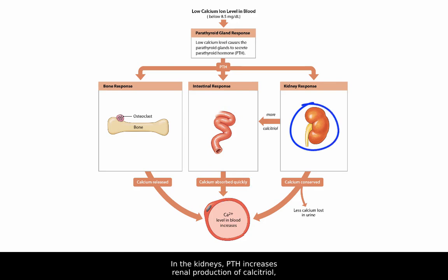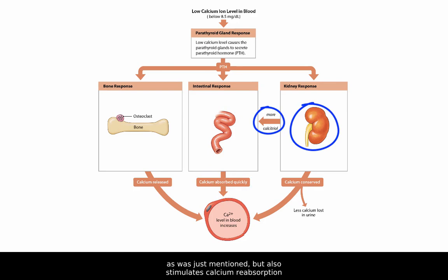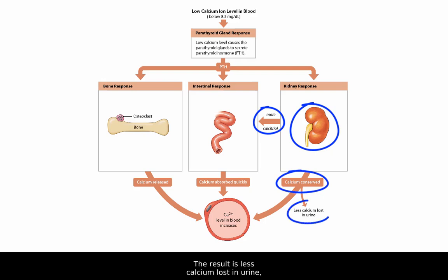In the kidneys, PTH increases renal production of calcitriol, which not only works at the intestines, as was just mentioned, but also stimulates calcium reabsorption in the kidneys. The result is less calcium lost in urine, which keeps more calcium ions in blood.